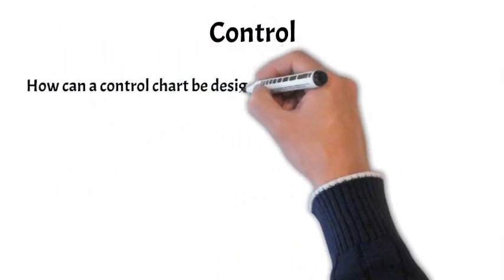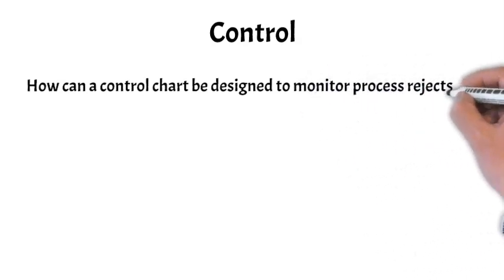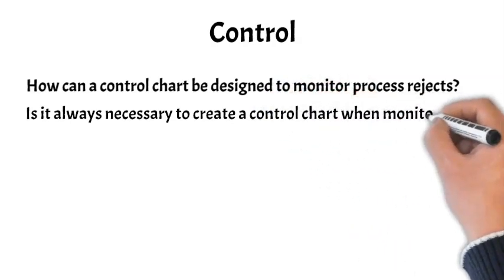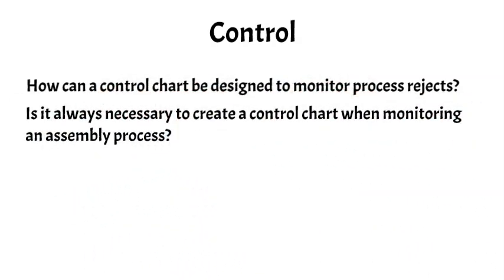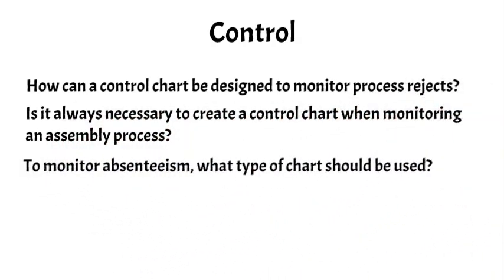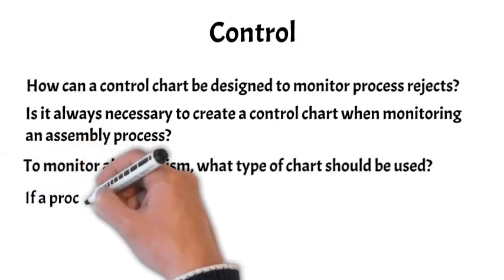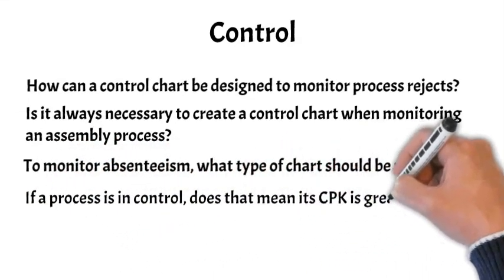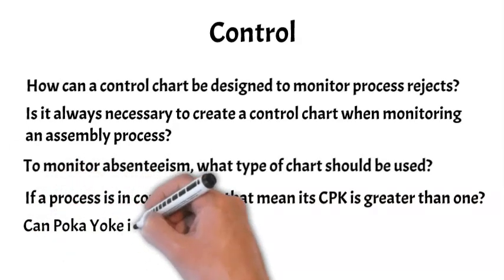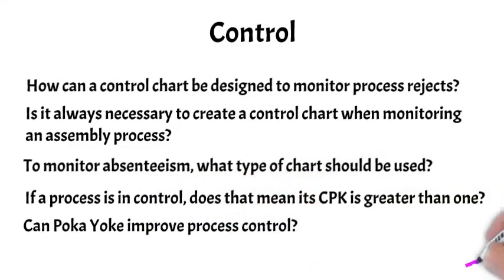Finally, Control. How can a control chart be designed to monitor process rejects? Is it always necessary to create a control chart when monitoring an assembly process? To monitor absenteeism, what type of chart should be used? If a process is in control, does that mean its CPK is greater than 1? Actually, the answer here was quite good also. Can Poka-yoke improve process control? Again, an excellent response.